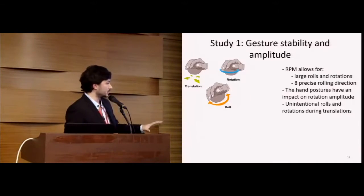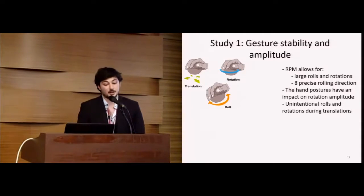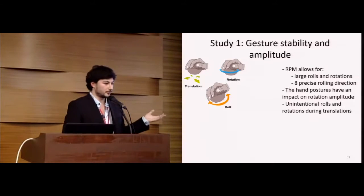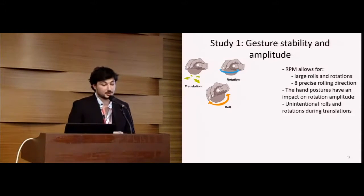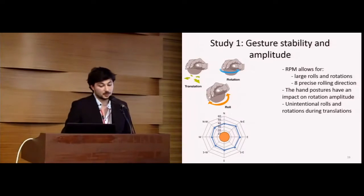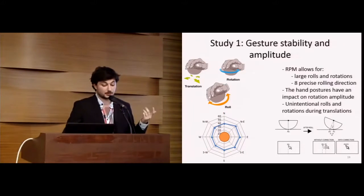To sum up this experiment's results, we found that the Roly-Poly mouse allows large rolls and rotations: 40 degrees for rolls and from 48 to 57 degrees for rotations. It allows eight precise rolling directions. It's important because we can map eight distinguishable actions to this device, for example, we could map this device to a marking menu. We also found that the hand postures have an impact on the rotation amplitude, and we found that unintentional rolls and rotations occur during translations. To cope with this problem, we propose two solutions. The first one is the usage of a threshold of 12 degrees for rolls and 15 for rotations, beyond which these gestures are considered as voluntary. And the second one is the correction algorithm that we propose and explain in the paper, which compensates those drifts.